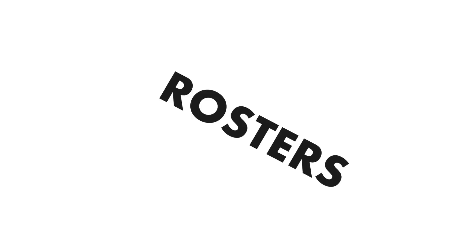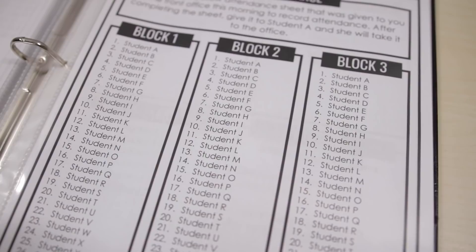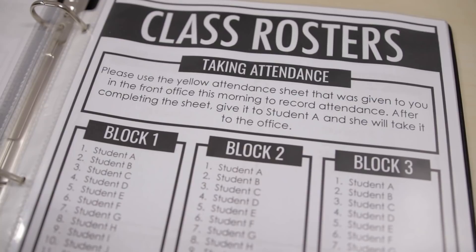The next page is for rosters — this is a non-negotiable. You need a student roster in your sub binder, and if you teach multiple classes you need to include each one. You could put each roster on a separate page, but personally I have three different groups and I put them all on a single page along with directions for taking attendance in the morning. Don't forget to label which roster is for which class, and you could even put the time you teach that class right on the roster.